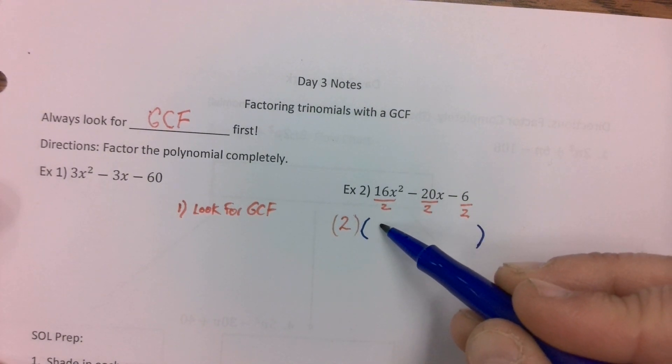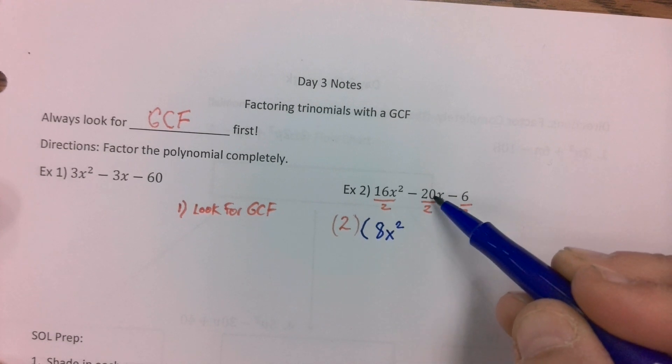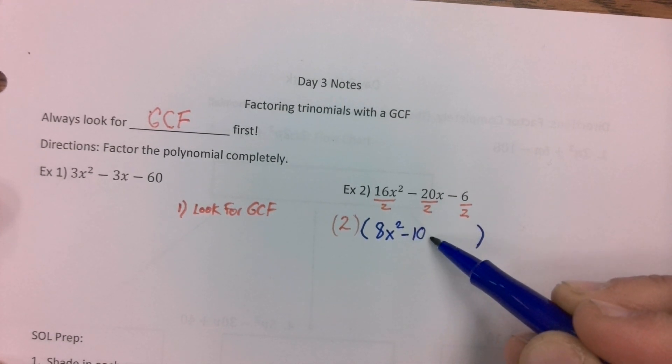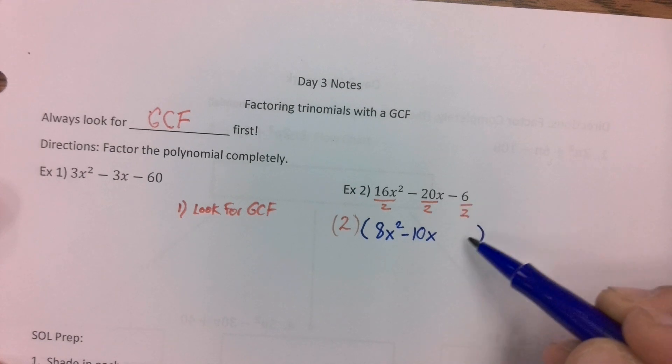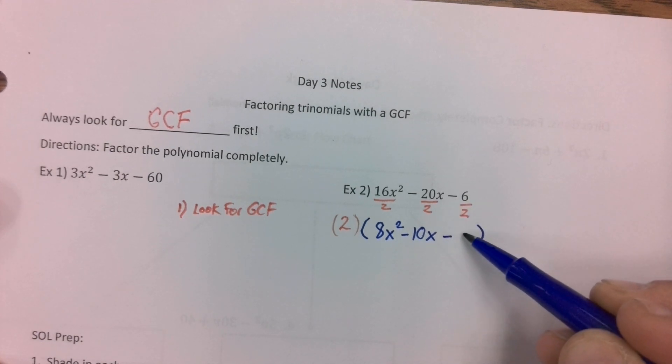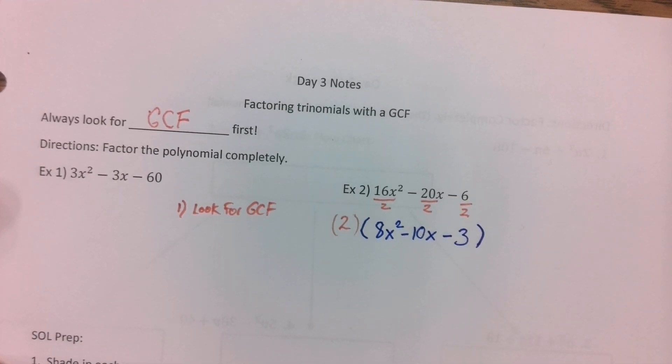16 divided by 2 is 8 and I still have my x squared and I have negative 20 divided in half is 10, negative 10. And negative 6 divided by 2, divided in half, is negative 3. Okay, so we've taken out our GCF, what's next?